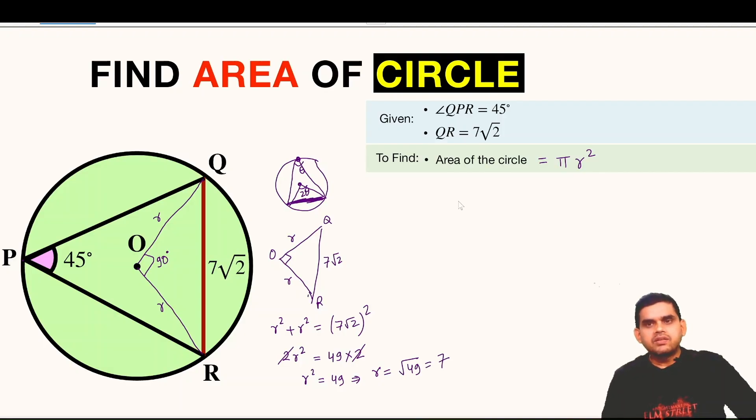So we have found the radius. Now we can substitute the value of r here, r square in this formula. So instead of pi I can write 22 over 7 times r square means 7 times 7. This is the square of radius. 7 and 7 gets cancelled. If we multiply 22 times 7, so 7 times 2 is 14 and then 15. So this is the area of this circle.